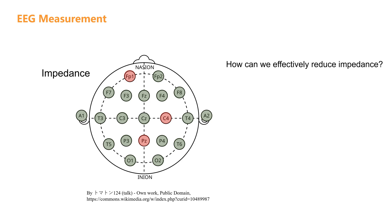So, how can we effectively reduce impedance? Here are some common methods. One, using conductive gel. Conductive gel can fill the gaps between the electrodes and the skin, enhancing conductivity. Two, cleaning the scalp, removing oil and dead skin cells from the scalp can help reduce impedance.